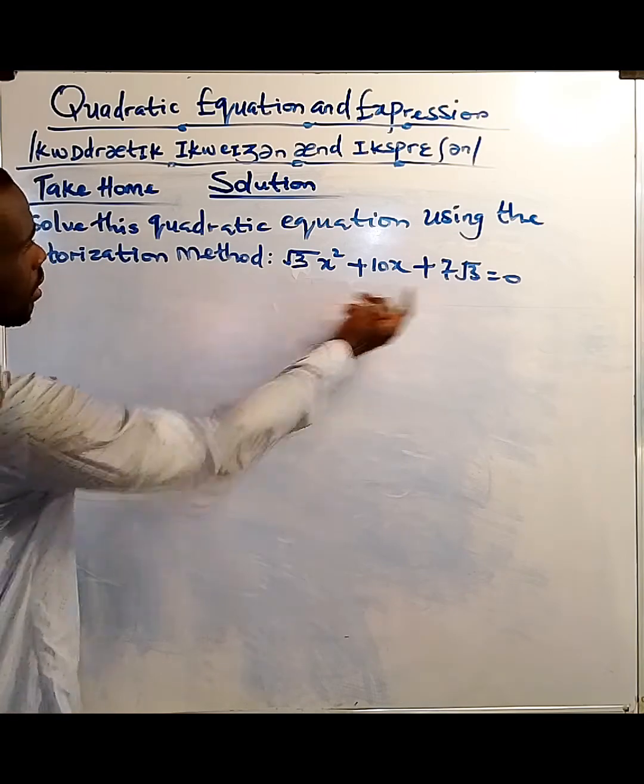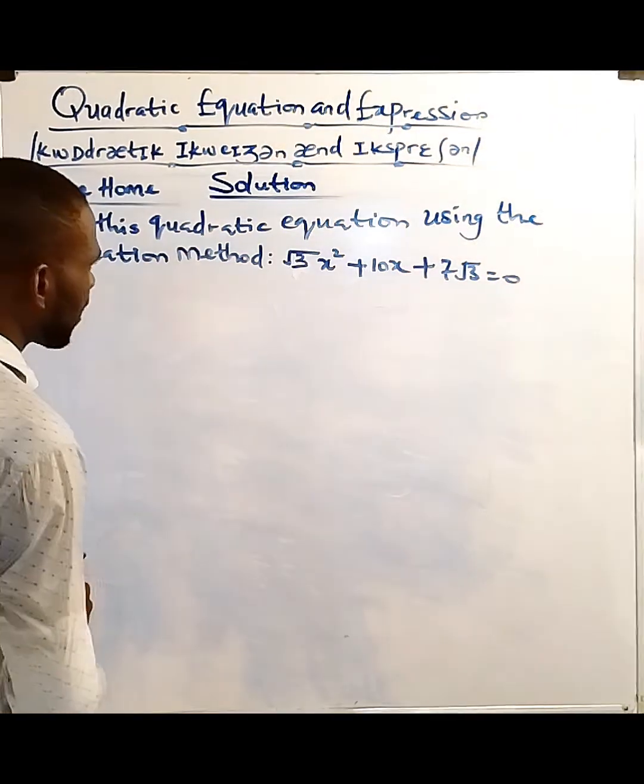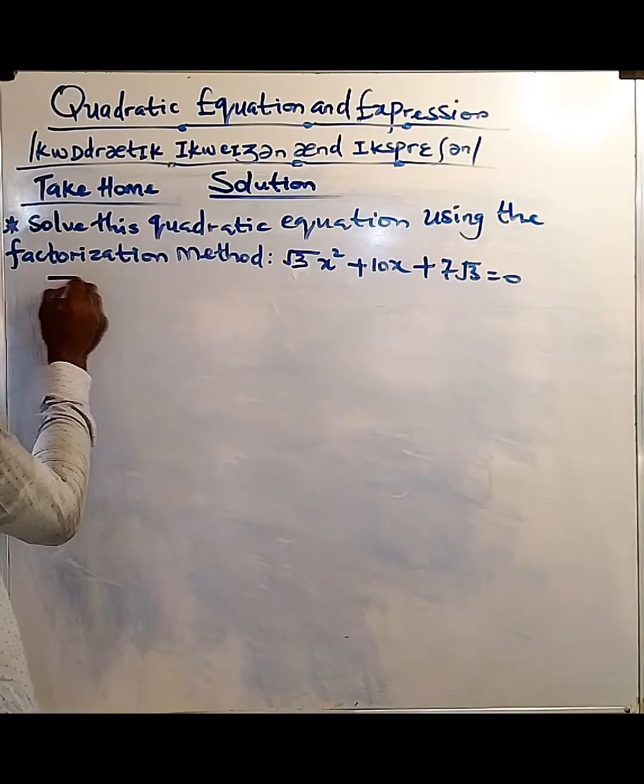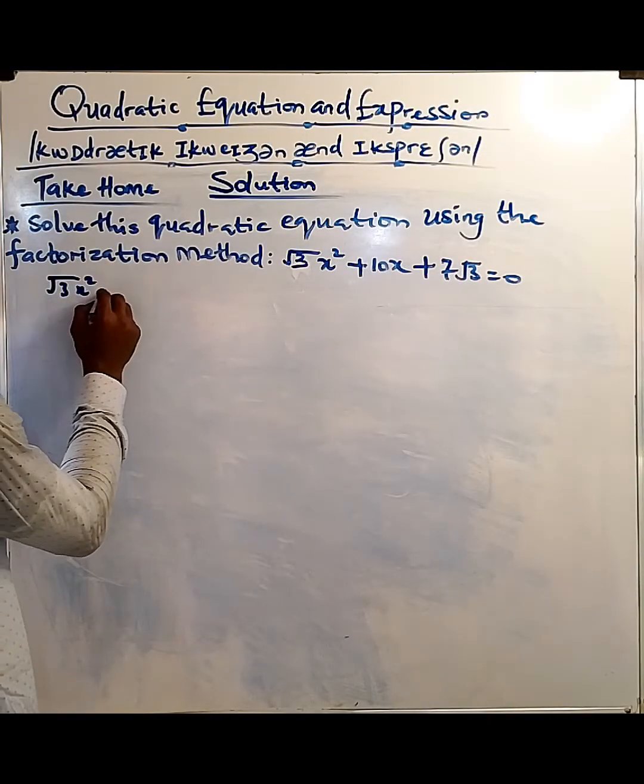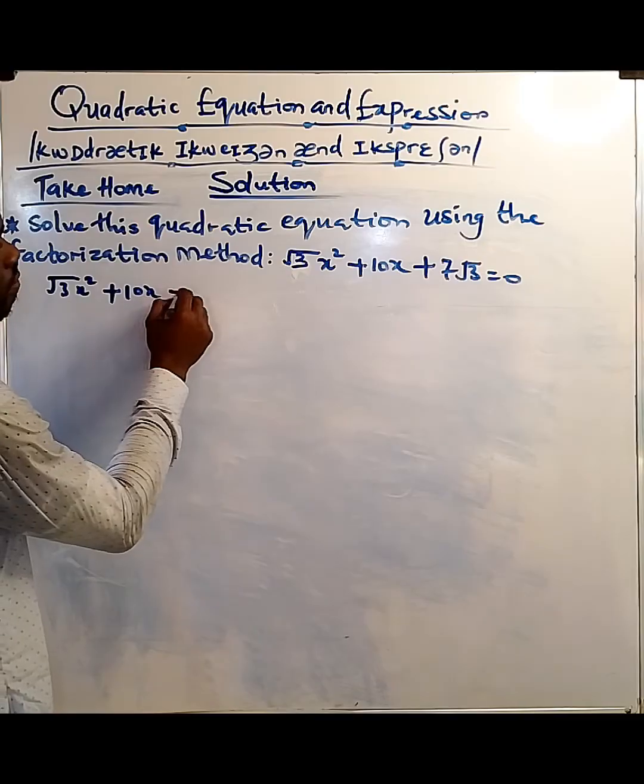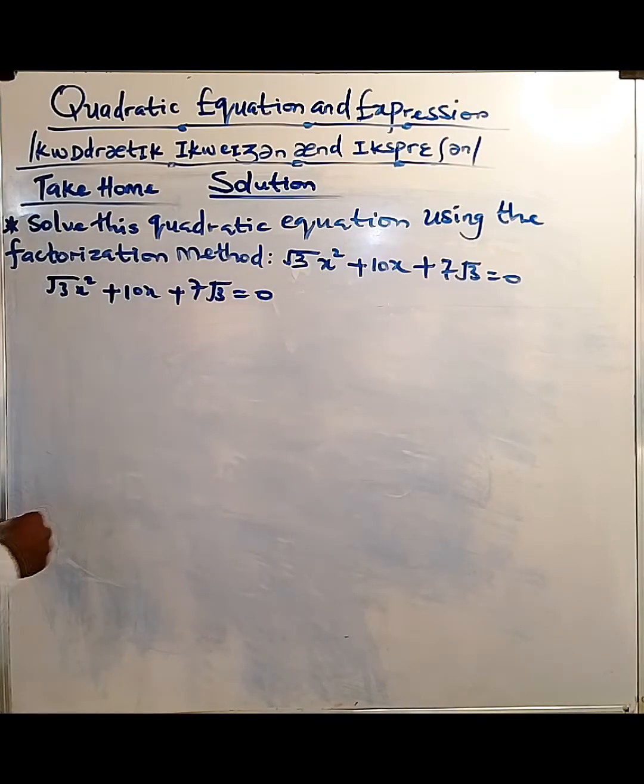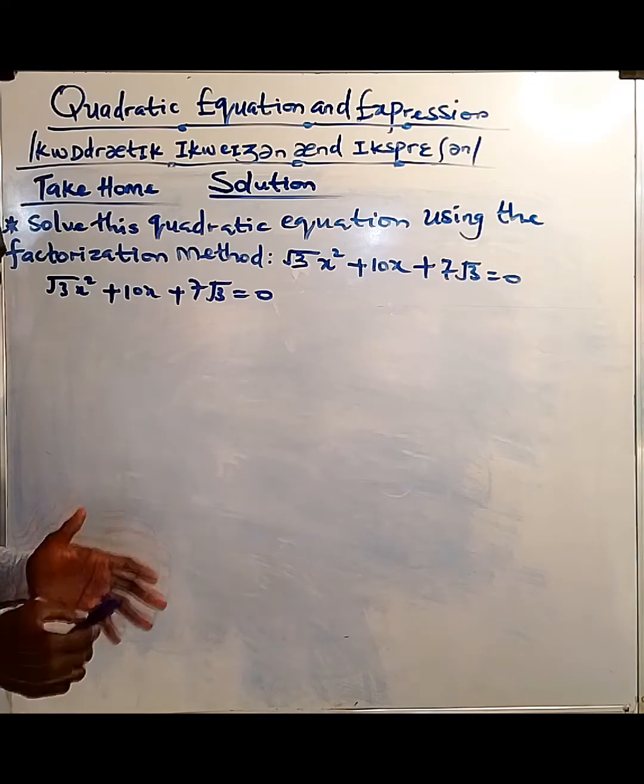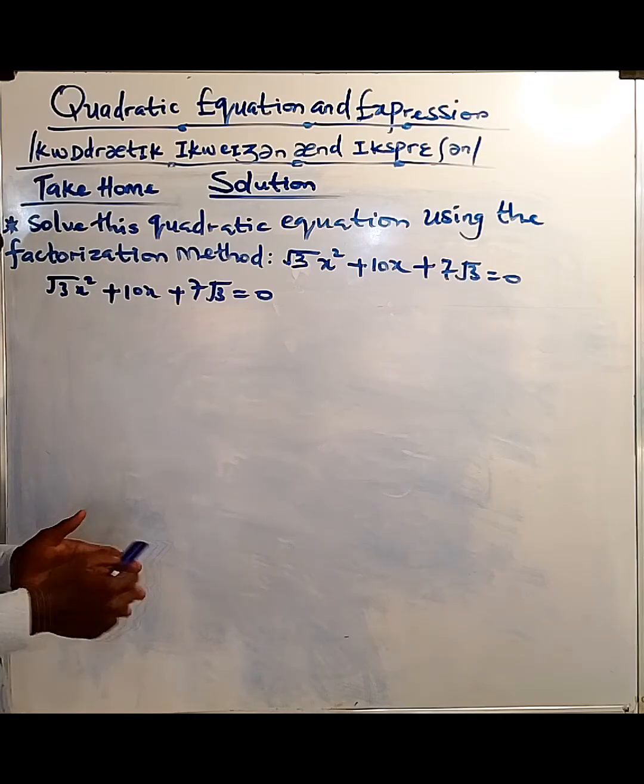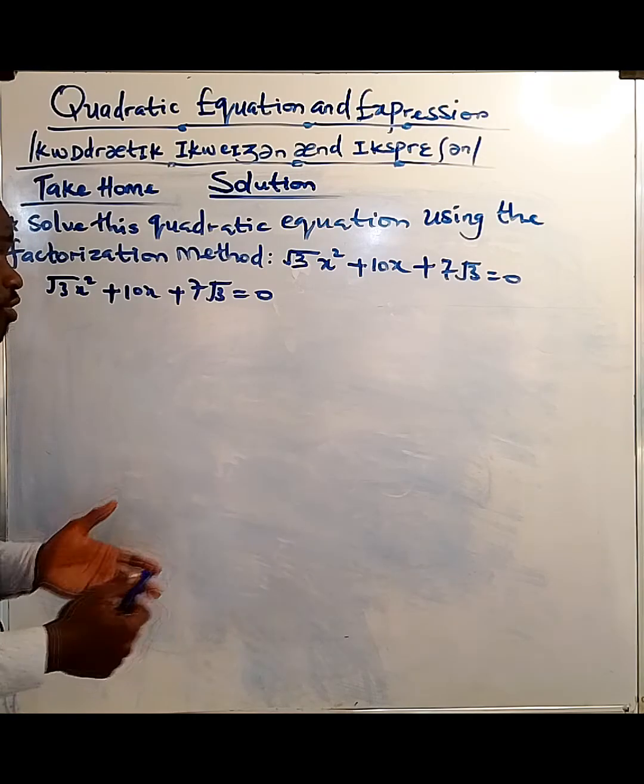As you can see, you can get fazed by the surd form that you can see on the board. √3x² + 10x + 7√3 = 0. Now, our sum and products are very important. We are still going to use them.